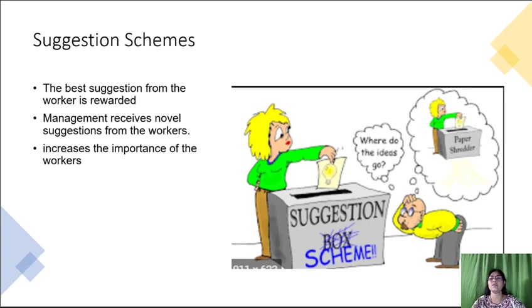Suggestion Schemes. Under this method, suggestions from the workers are invited as regards improvement in working, how to avoid accidents, cleanliness, etc. The best suggestion from the workers is rewarded and a certificate to that effect is given to the worker so that others can make better suggestions in future. Management receives new suggestions from the workers, which increases the importance of workers with the management. This is a method of encouraging workers in the industrial establishment.